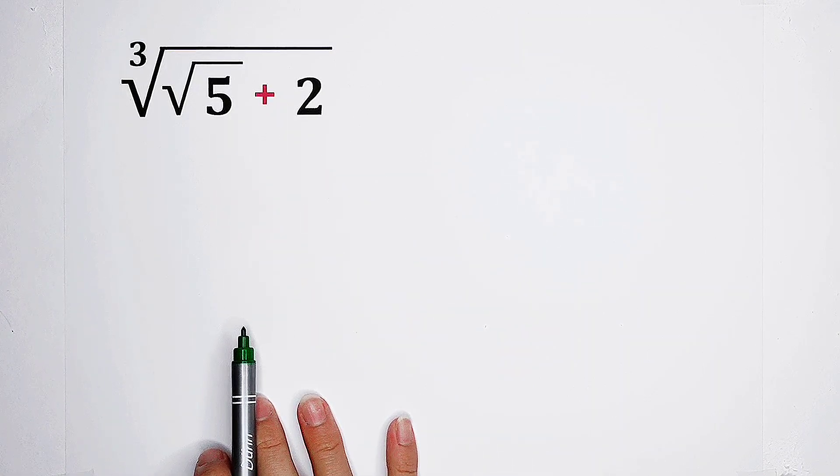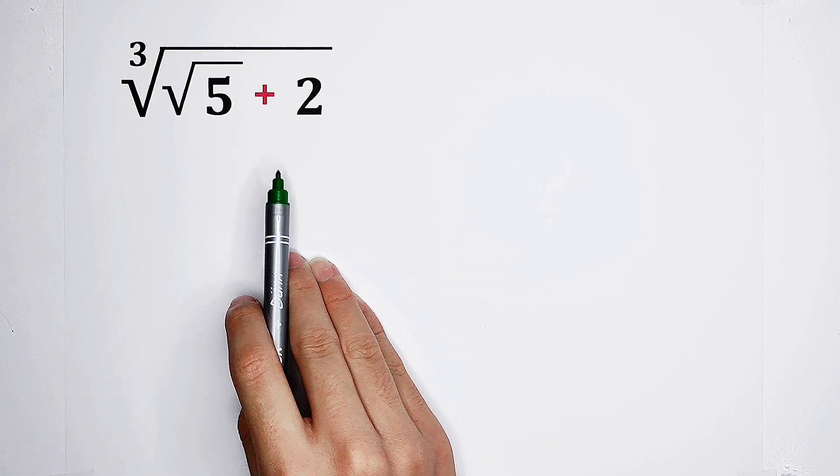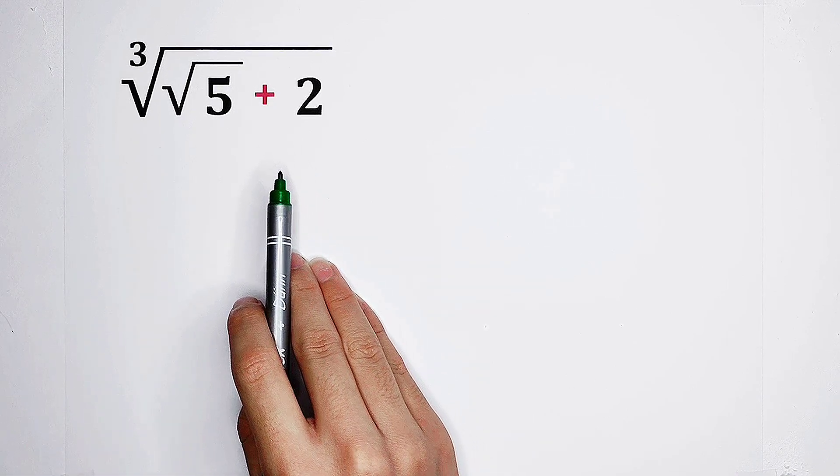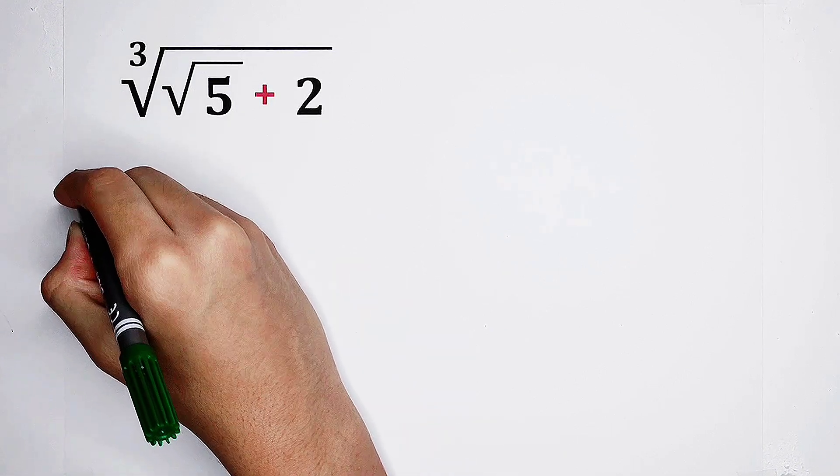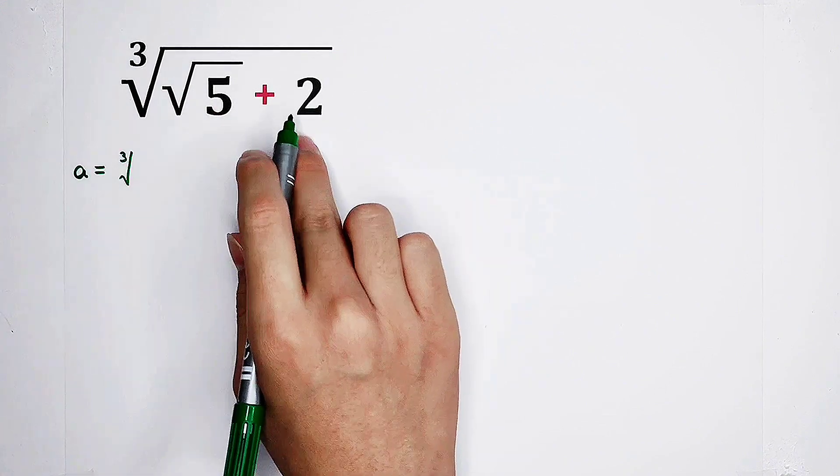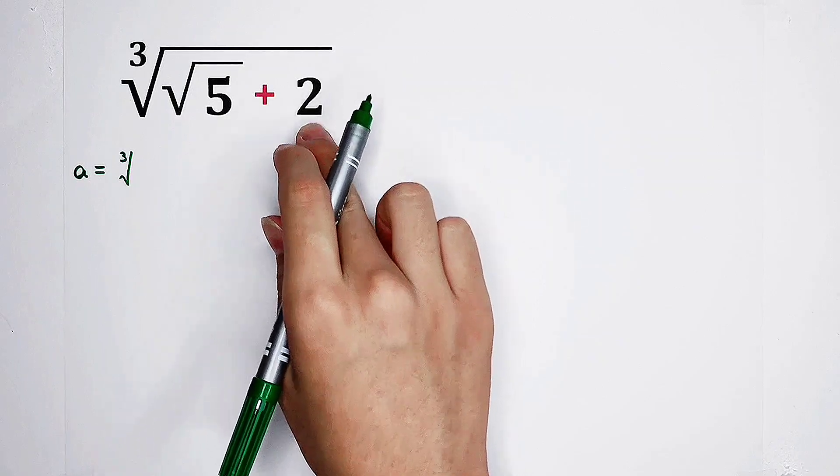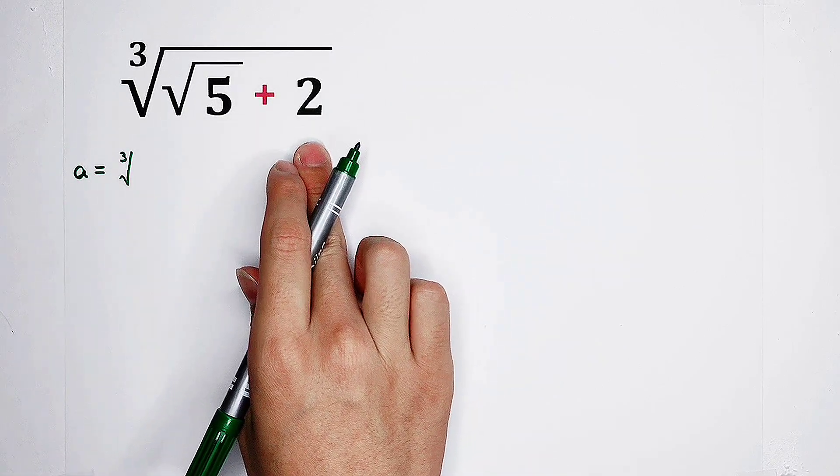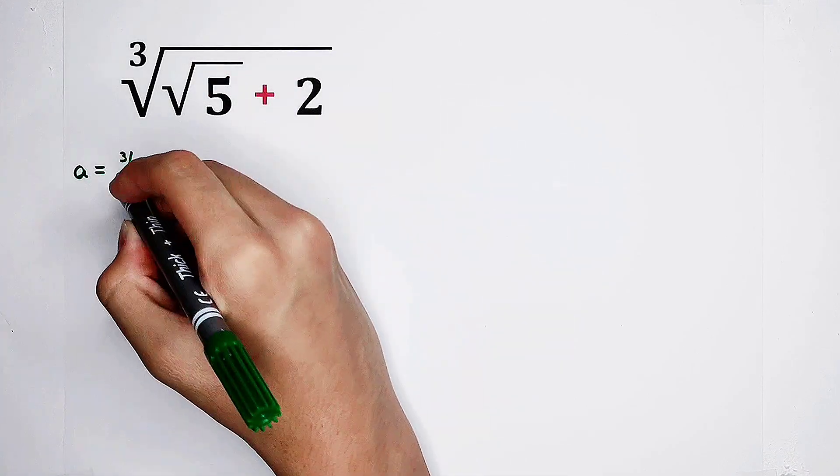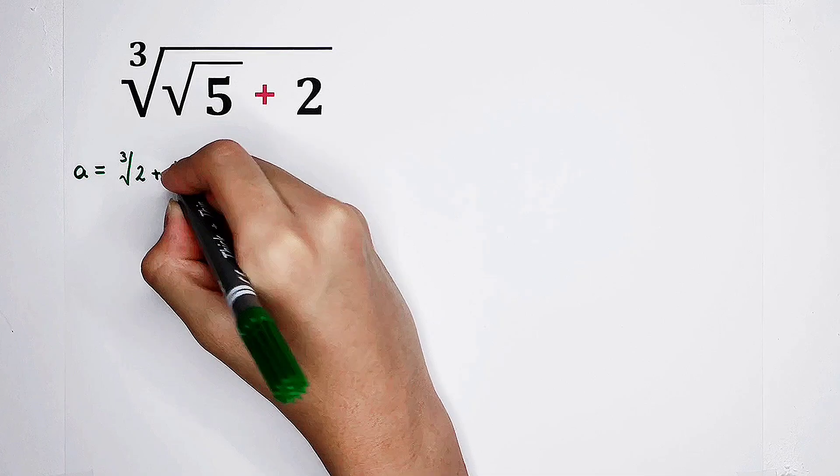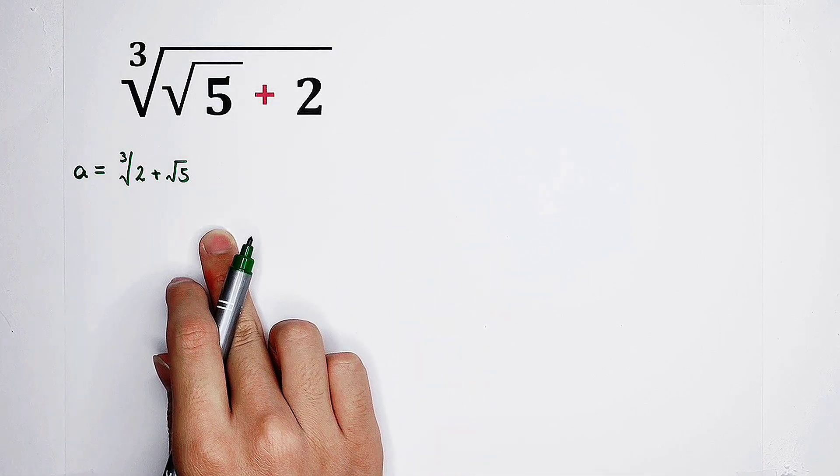As our first step, I would like to substitute this term as a and construct another term. So let's firstly substitute this guy as a. Now what I'm gonna do is to change the order of these two numbers, square root of 5 and 2. I would like to write 2 plus square root of 5 here. Why? I'm gonna explain to you later.